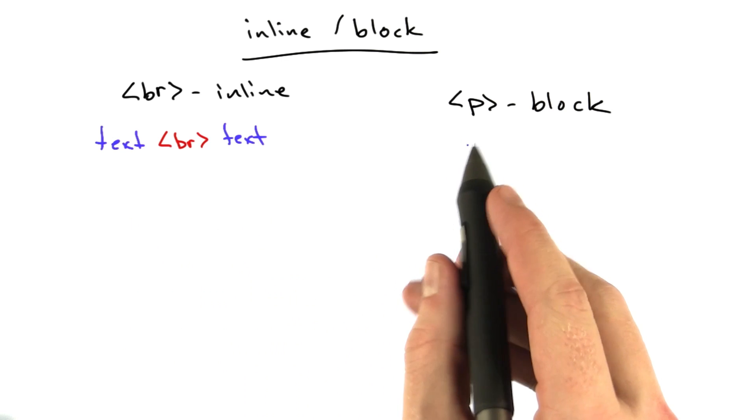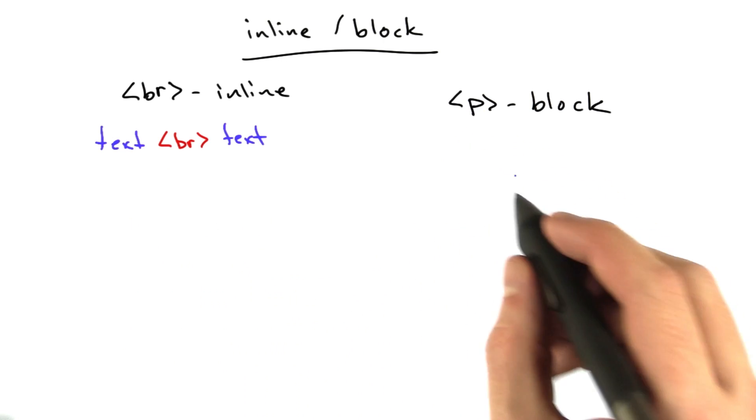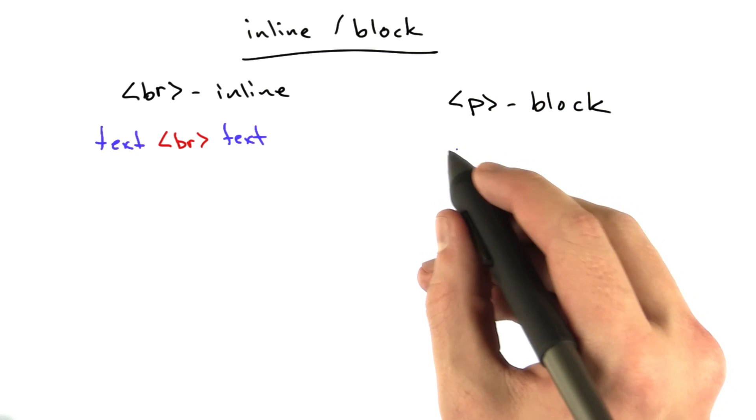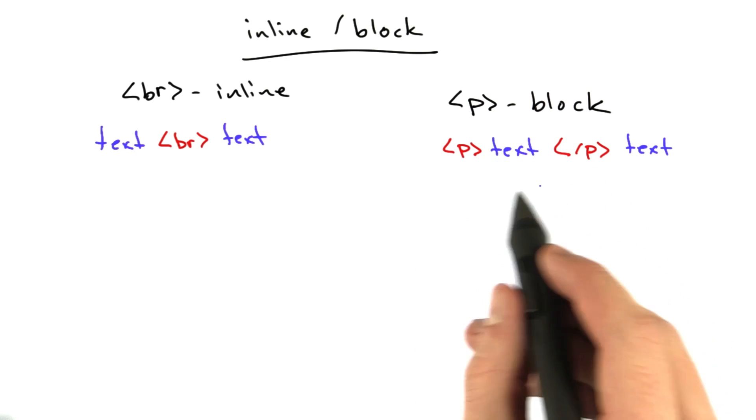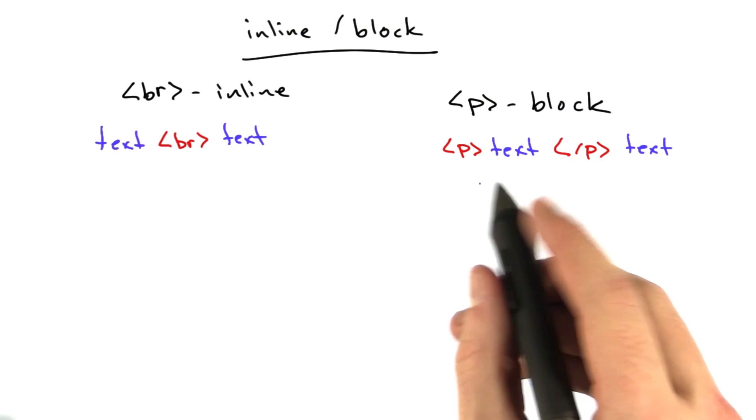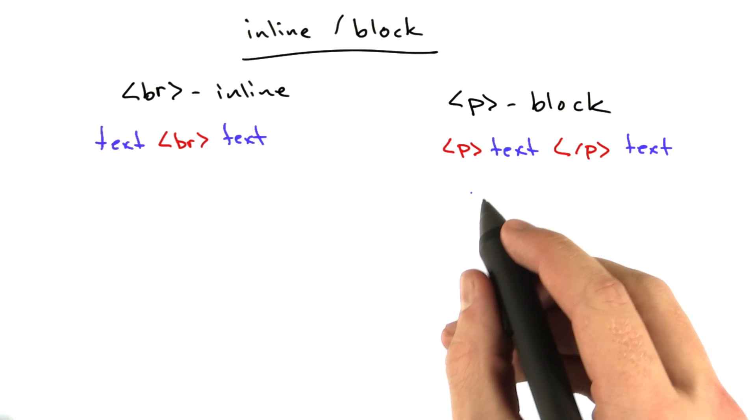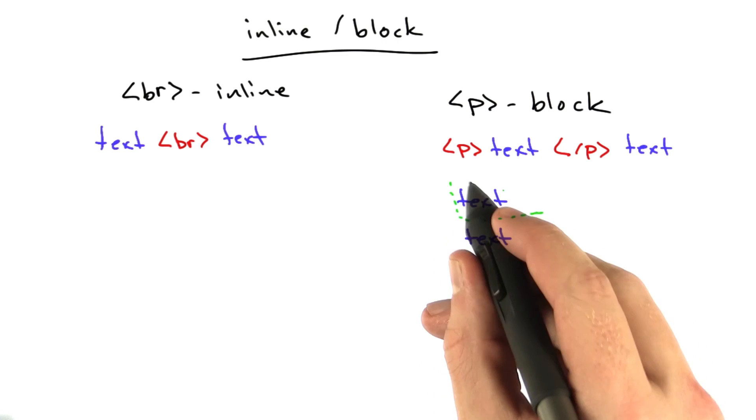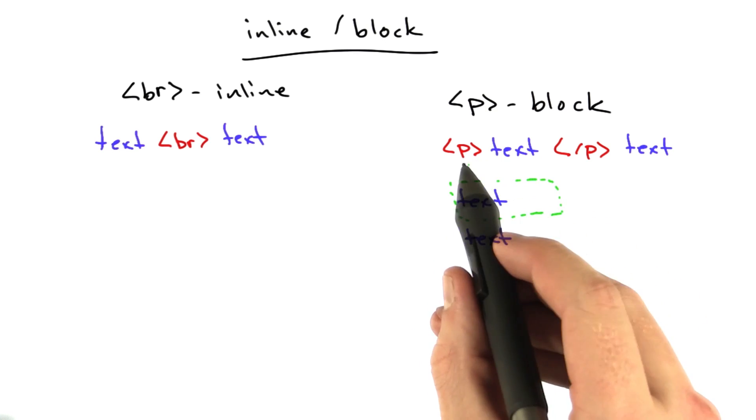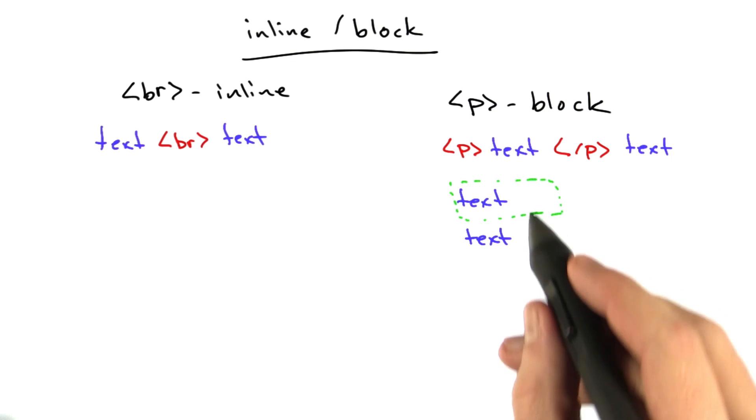The p tag works differently. The p tag actually makes an invisible box. So when we have HTML that looks like this, this creates an actual box. So instead of just rendering text blank line, what this is actually rendering is something sort of like this. You've got two lines of text, and there's actually this invisible box around text, and that's what the p tag does is it makes this invisible box.